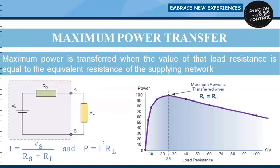Maximum power transfer: maximum power is transferred when the load resistance equals the equivalent resistance of the supplying network. The power versus resistance curve shows that when load resistance equals source resistance, maximum power is transferred in the circuit.